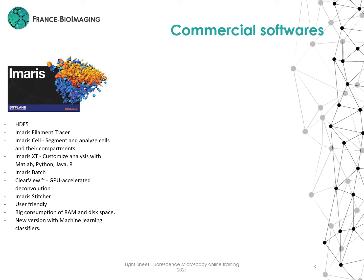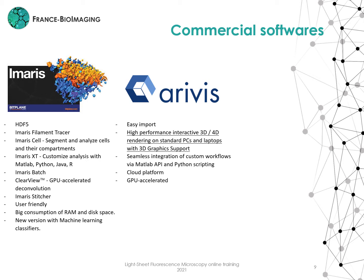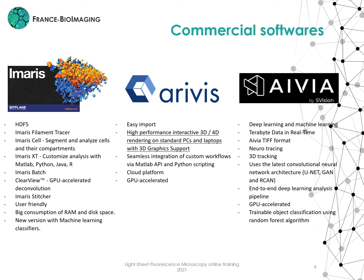The second one is Arivis. The main advantage of Arivis is the high performance on standard PCs and laptops for visualization. It allows creating custom workflows using MATLAB and Python. It has also GPU acceleration. The third one is Vaa3D. This software is mainly for deep learning and machine learning applications, with a specialty format. They also have some tools for neural tracing and 3D tracking. It uses neural network architectures such as U-Net, has GPU acceleration, and allows classifying objects using a random forest algorithm.